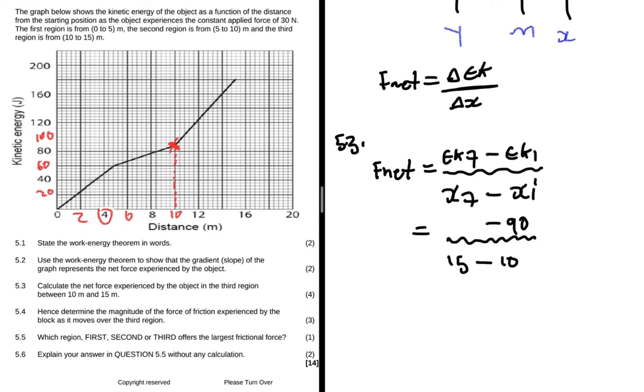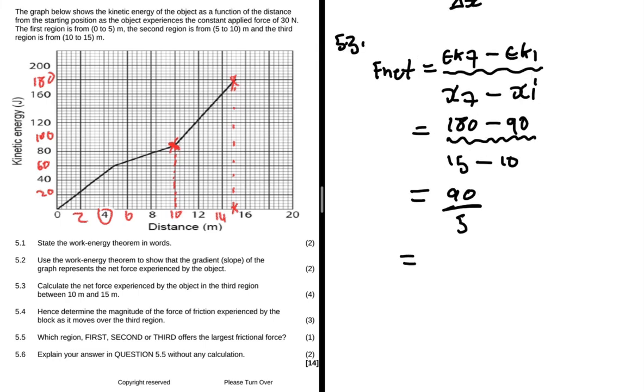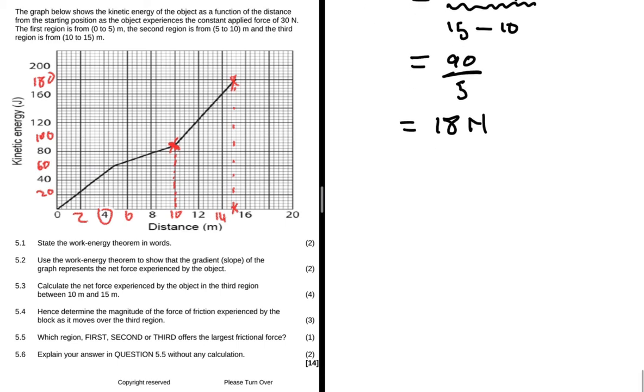Now let's come to EK final. So this is 10, 12, 14, so 15 is somewhere here. So let's go up and then let's see where we end up. We end up at around, so this is 160, so this is 180 here. So we have 180. So 180 minus 90, that is 90, and then 15 minus 10, that is equals to 5. So 90 divided by 5 is equals to 18. So F net between 10 and 15 is 18 newtons.